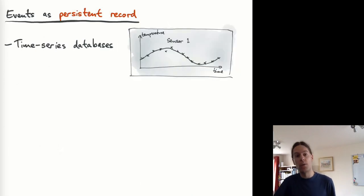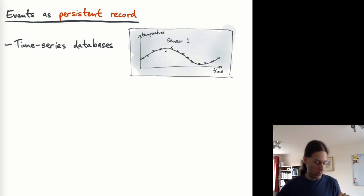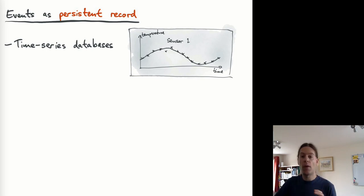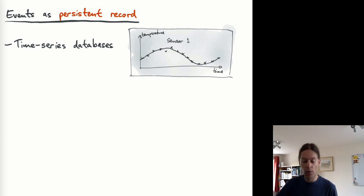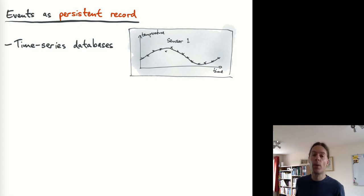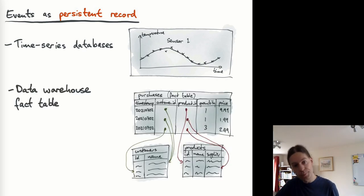We could take a very different perspective: we want events to be recorded on disk as a permanent record. One example is a time series database, which you might use to record readings from a sensor — every minute the sensor sends a reading of the current temperature. You don't need to call any application code every minute; all you want is to store those values so that afterwards you can draw a chart of how temperature changed over time. A reading from the sensor would be an event.